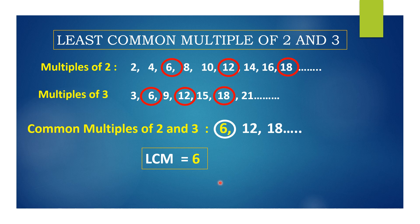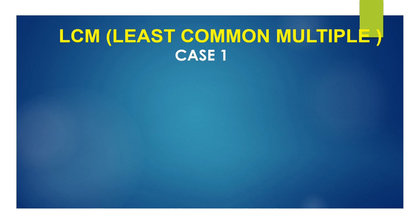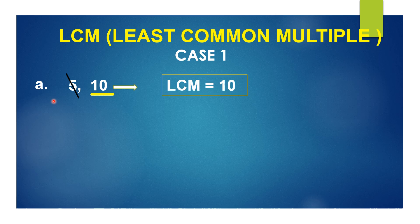Now let us see how to find the LCM using the shortcut trick. Consider 5 and 10. The first step is to identify the bigger number — obviously it is 10. Now question yourself: is 10 divisible by any of the numbers present here? Is 10 divisible by 5? Yes — 5×2=10. So you cancel 5. The LCM of 5 and 10 is 10 itself.